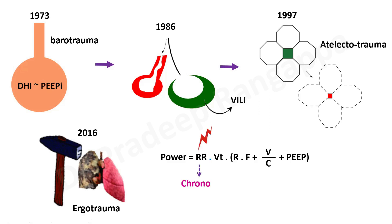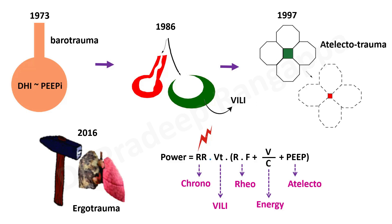Respiratory rate causes chrono-injury due to energy transfer to the lung. Tidal volume causes volutrauma. Resistance and flow cause rheotrauma. Energy trauma is due to volume divided by compliance. PEEP causes atelectotrauma. The cumulative effect of all these traumas is called ergotrauma — every variable we set on the ventilator has an influence on causing lung injury. All this leads cumulatively to what we call mechanical power.